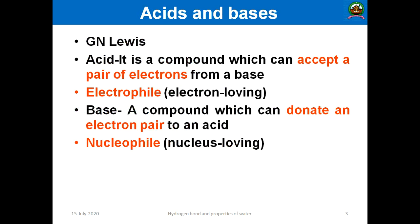A Lewis acid is a compound which can accept a pair of electrons from a base — these are electron-loving species, or electrophiles. Acids are electrophiles. A Lewis base is a compound which can donate an electron pair to an acid. Lewis bases are nucleophiles, or nucleus-loving species.